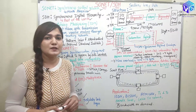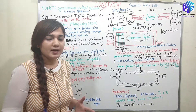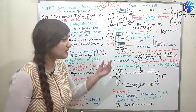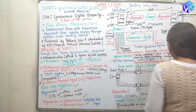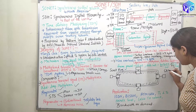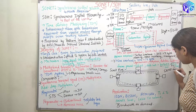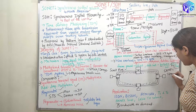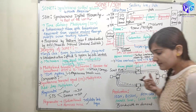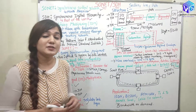The data rate comes out to be nearly equal to 50.112 Mbps, which is a good data rate and a reason for the popularity of SONET. This is the data rate for SDH1. SONET is a multiplication of SDH by 3.